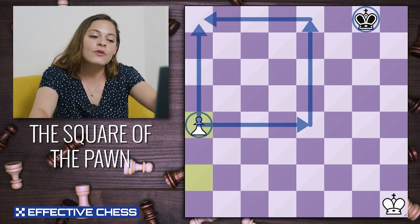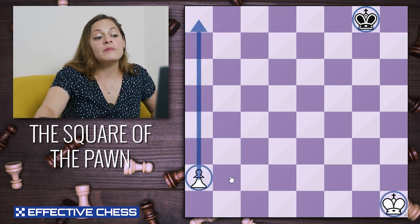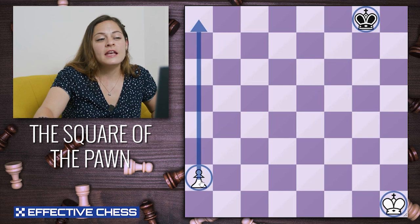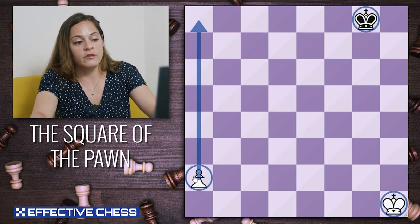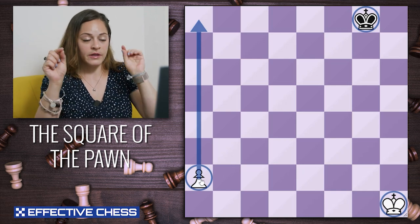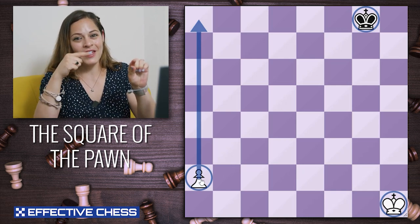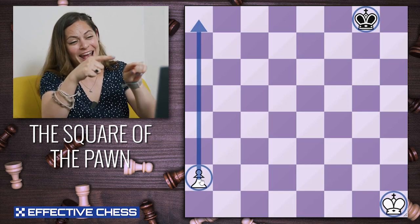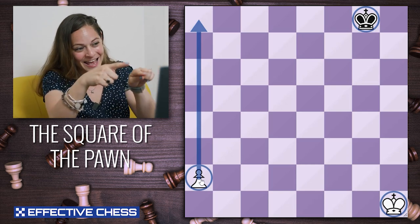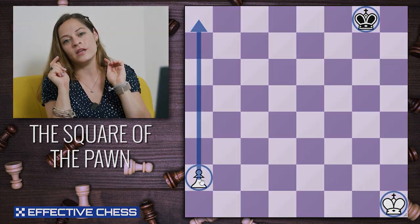Why is this so important? Well, you might be thinking: is my pawn stoppable or not? Now, true, you could calculate by moving in your head — A4, king F8. A5, king E8. A6, king D8. A7, king C8. A8, queen. But the square of the pawn lets you see this instantly without calculating every move.